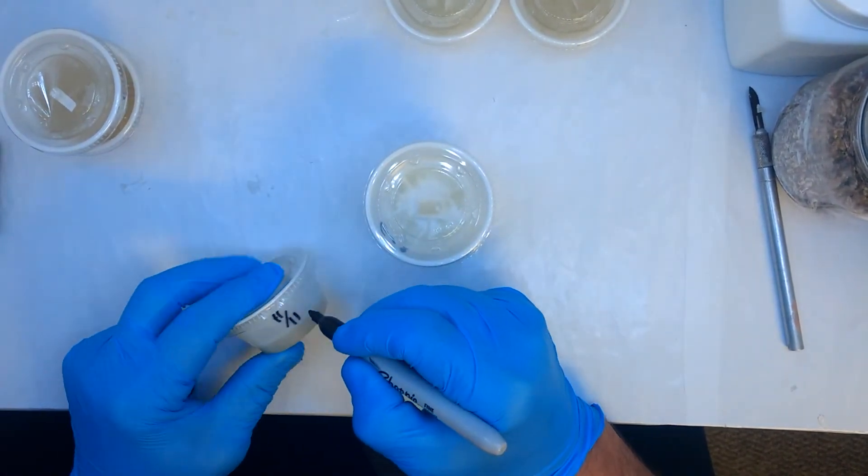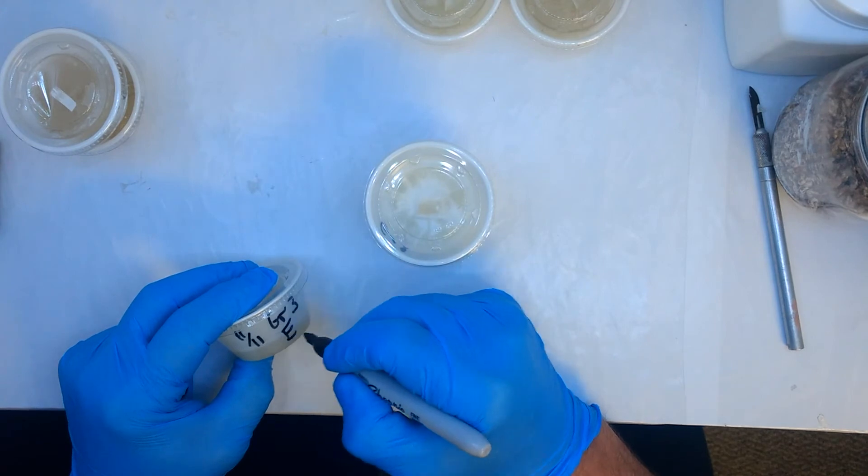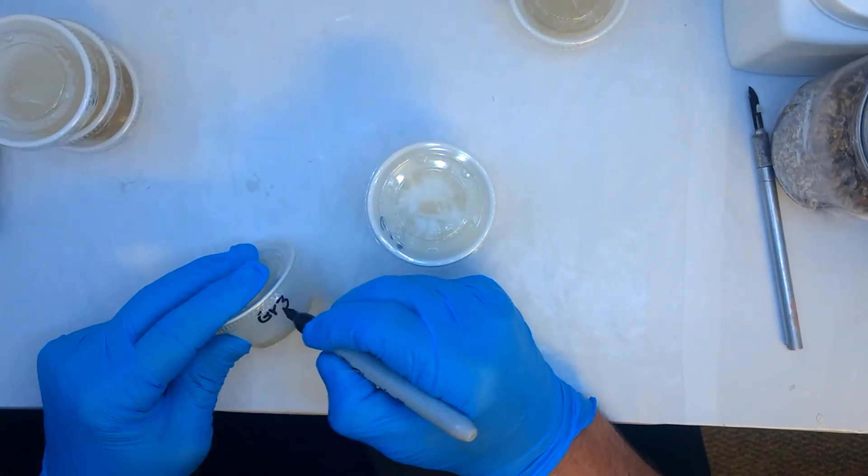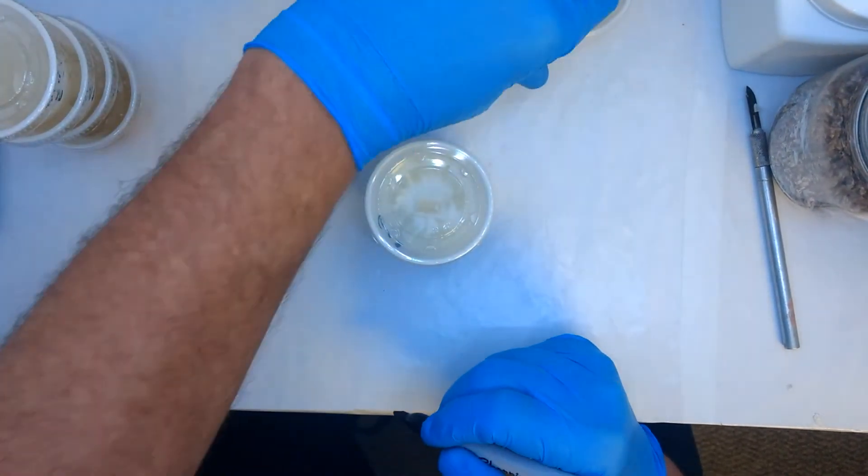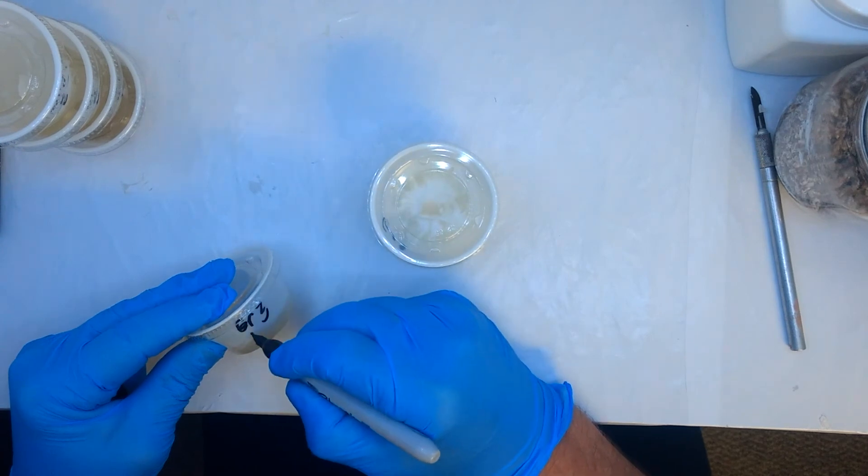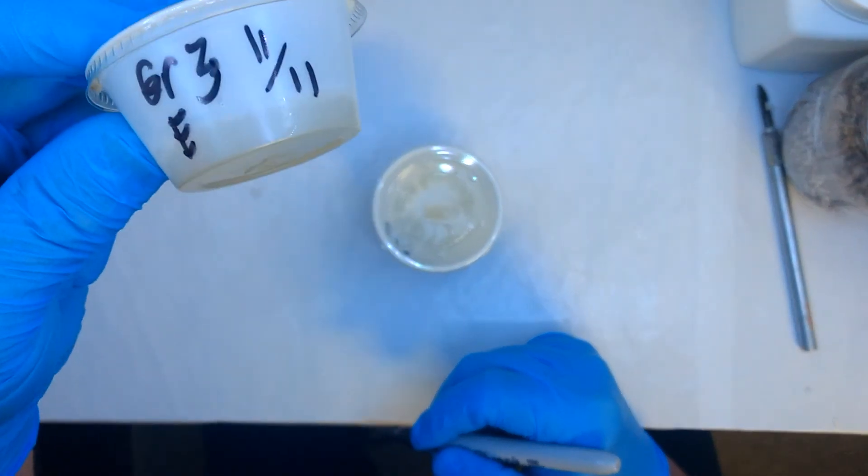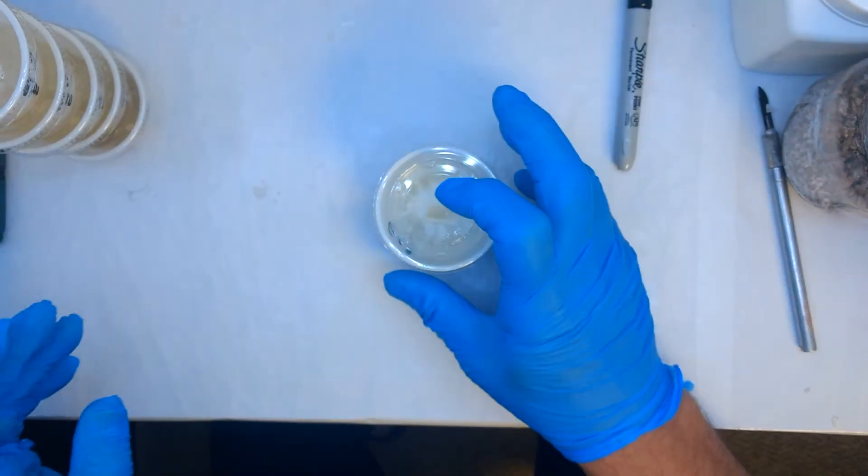In case someone else comes down to work or do some work for you, whereas GR is Grain, E is, I went from A to Z, E is just another label on the grain, and the date of course.